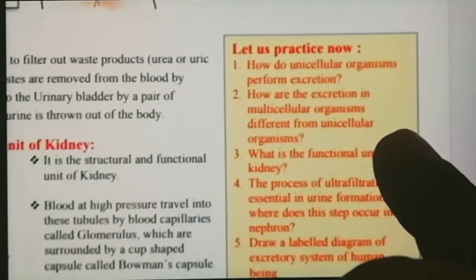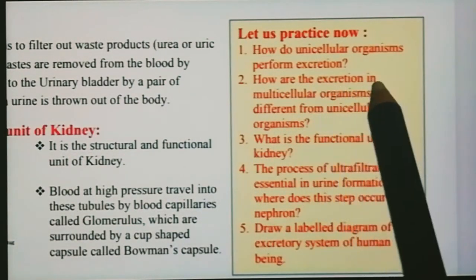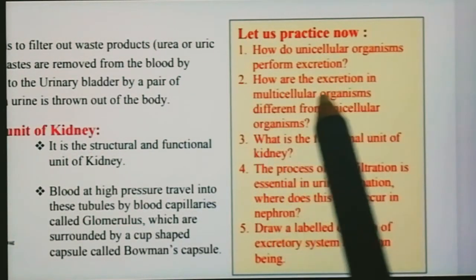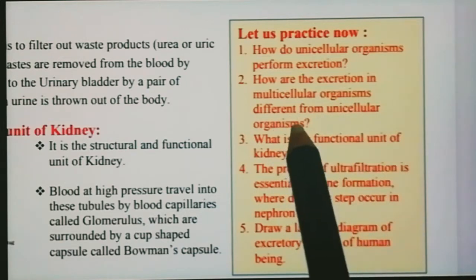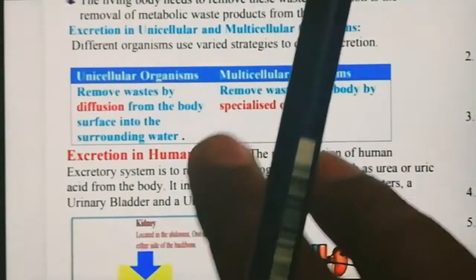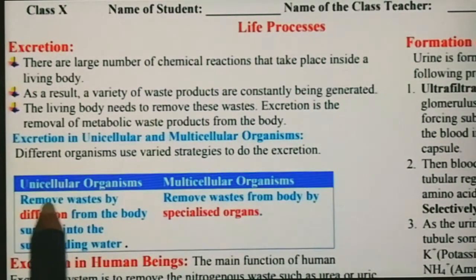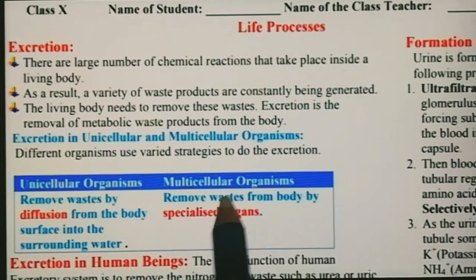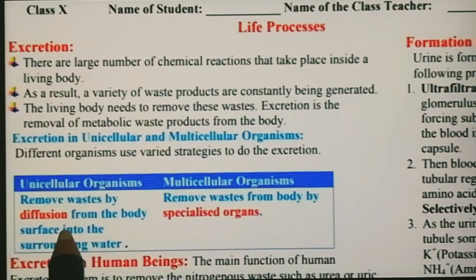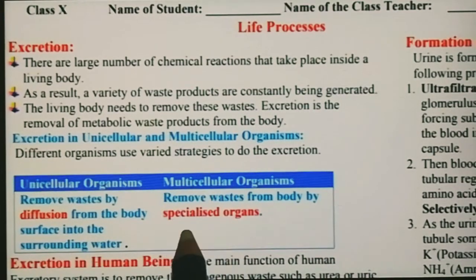Second question — यहाँ से लिख लेना। How are excretion in multicellular organisms different from unicellular organisms? यह भी यहाँ पर मिलेगा, अच्छे से differentiate करके दिखाया हुआ है। Unicellular organism और multicellular organism में differentiation देखिए — unicellular में diffusion body surface से होता था, जबकि multicellular में specialized organs होते हैं।